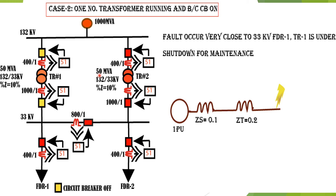In this lecture, relay coordination is discussed considering Case 2: one transformer is running, the bus coupler breaker is on, and the fault occurs very close to feeder one at the 33kV bus. Transformer one is under shutdown for maintenance, transformer two is running, and the fault current is contributed only by transformer two.